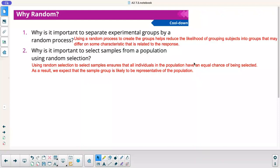Why is it important to select samples from a population using random selection? Again, using random selection to select samples ensures that all individuals in the population have an equal chance of being selected. As a result, we expect the sample group is likely to be representative of the population. You need random sample groups to really get a good idea of what you're trying to find. And the bigger your group, the better it is. It's obviously always not feasible to poll everybody that you're trying to get the data for. But the bigger, the better. Thanks for watching this video. Hope you enjoyed it. We'll see you next time.